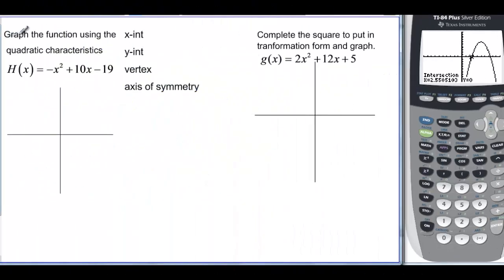So let's try it. Graph the function using the quadratic characteristics for the x-intercepts. If I look at this one, H(x) = -x² + 10x - 19, I need factors of 19 that are going to add up to 10. And 19 is a prime number, so we're not going to be able to find those x-intercepts. We're not going to graph those because they're not nice. The y-intercept, though, we know that's going to be (0, -19). So 0, we'll call this down here, -19. That's the y-intercept.